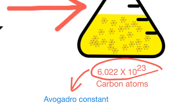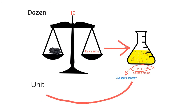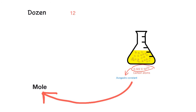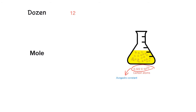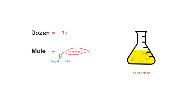Any substance containing 6.022×10²³ atoms or molecules is said to be 1 mole. Still confused? All you need to remember is that the mole is just a number — just like the word 'dozen' which equals 12, a mole equals 6.022×10²³.